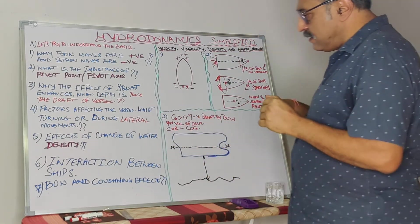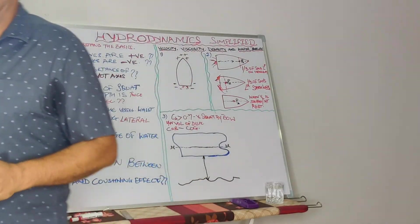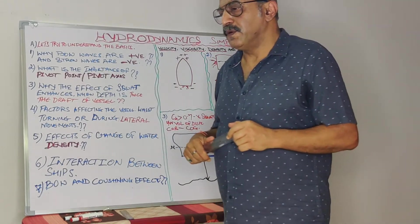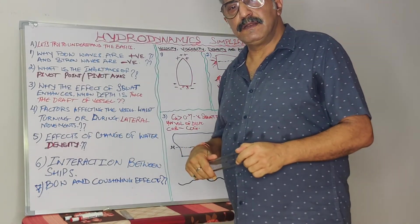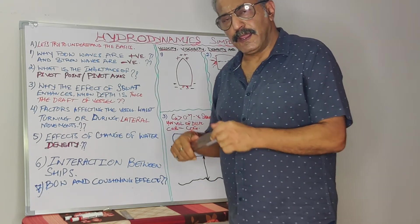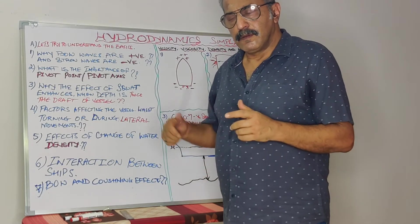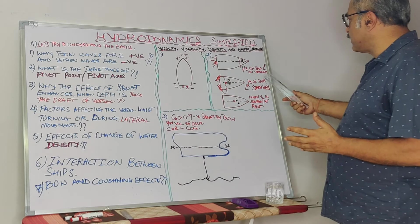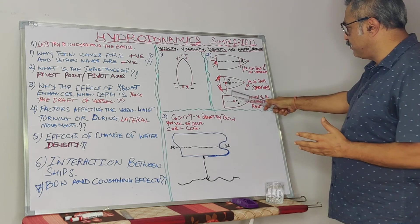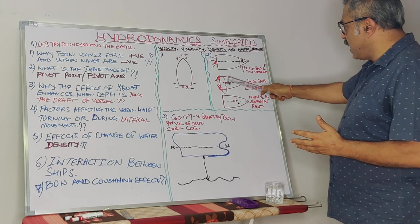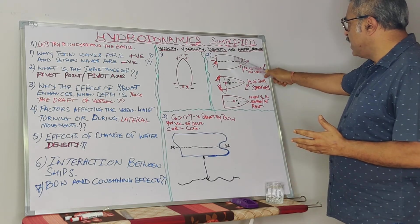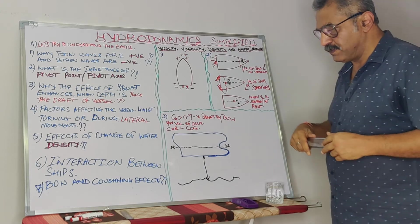The pivot axis, pivot point, has to quite an extent, I would say perhaps maybe 90% of role it plays, when you are maneuvering the vessel towards during the pilotage or going alongside. The reason it has got the importance is, as we said earlier, we all are aware of it, that when the vessel is at rest it's at the center of the ship, and the vessel when she is going astern it's about one-third of the distance from the stern, and when the vessel is going headway it's about one-third from the bow.